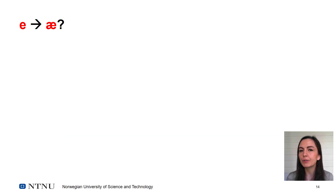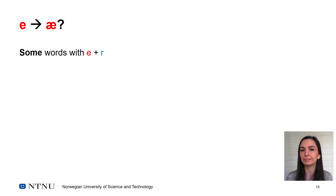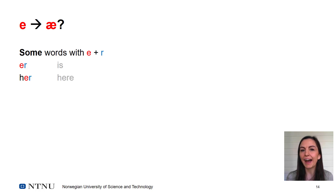Sometimes e is pronounced like ä. This happens in some words where e is followed by r. Like är, här, fär.